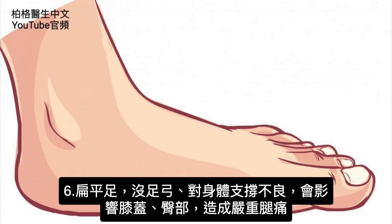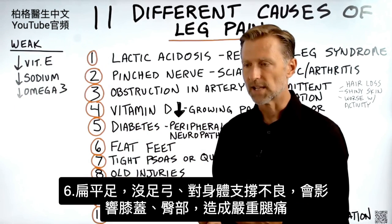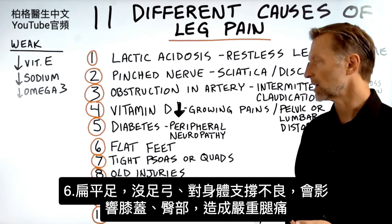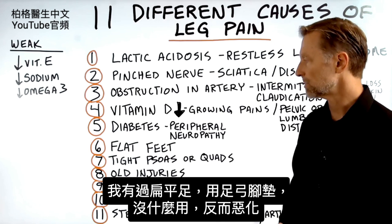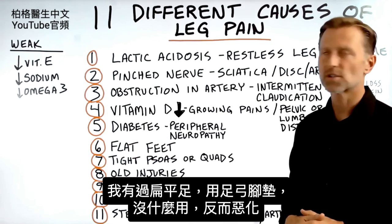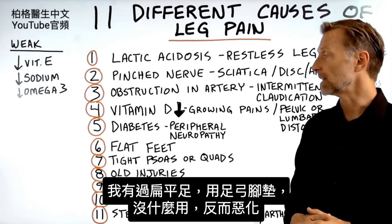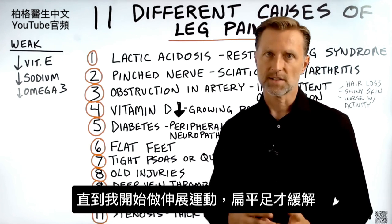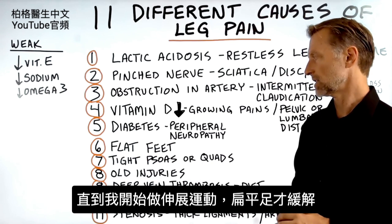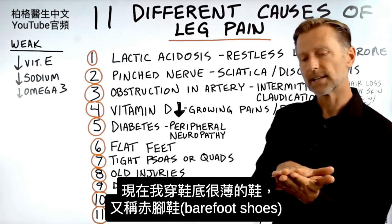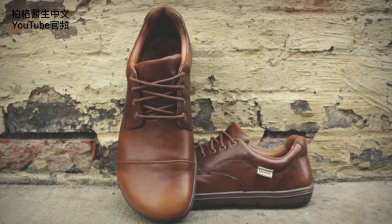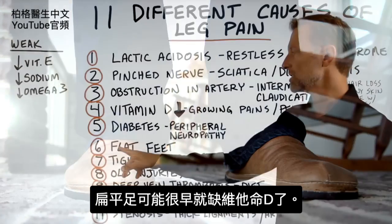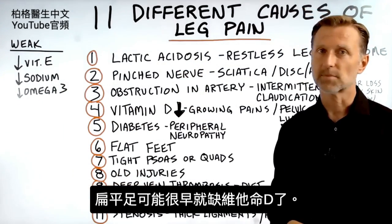Number six: flat feet. If your foundation isn't supporting the whole body with the correct arch, that can throw off your knees and hips and cause serious leg pain. I had flat feet my whole life and used arch supports — they didn't really work; in fact they made things worse. It wasn't until I did strengthening exercises and stretches that I got relief. Now I wear completely flat-sole barefoot shoes that force your toes and feet to strengthen the muscles. This is also tied to a vitamin D deficiency early on.